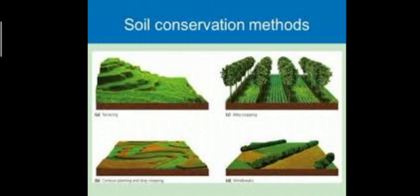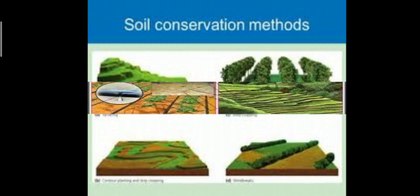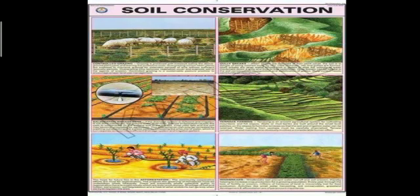Next we talk about soil conservation. Soil conservation means when protection is given to soil against erosion. The formation of a layer of soil that is one centimeter thick takes more than a hundred years, but it can get eroded within a few years. It is therefore important to protect soil from erosion.